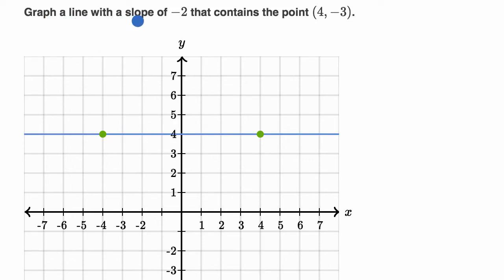We are told graph a line with a slope of negative two that contains the point four comma negative three. And we have our little Khan Academy graphing widget right over here where we just have to find two points on that line and then that will graph the line for us.